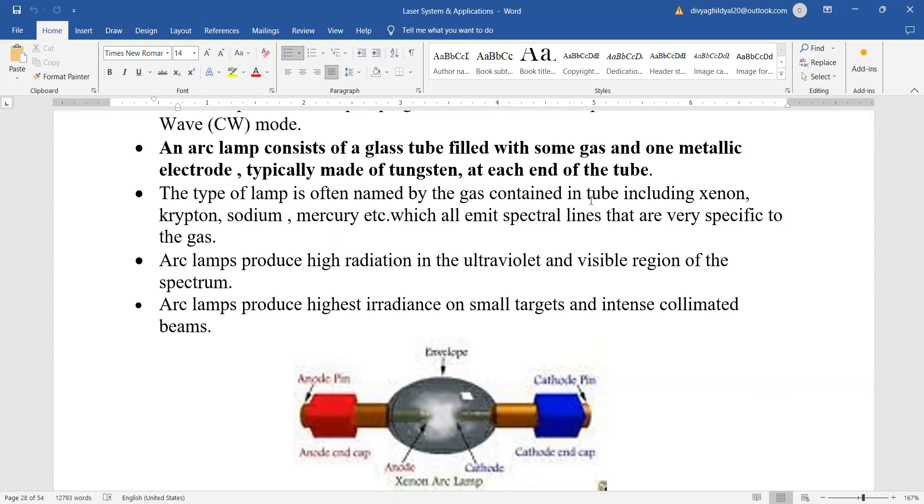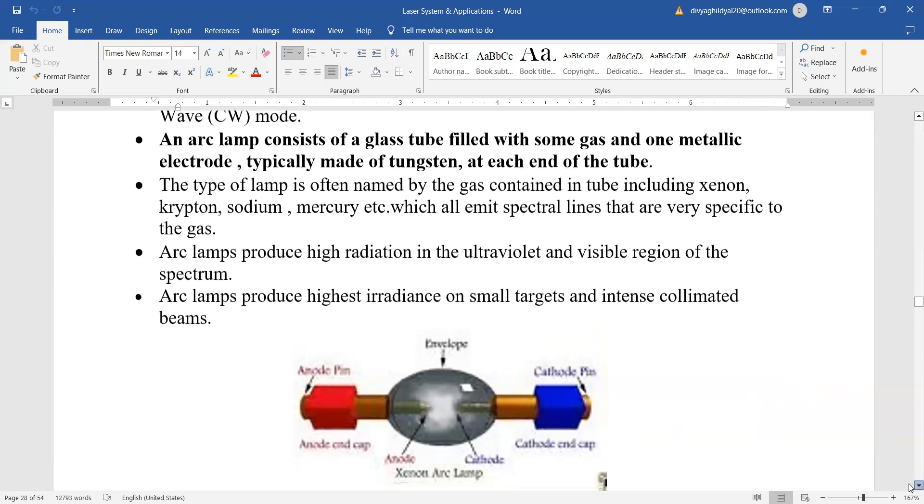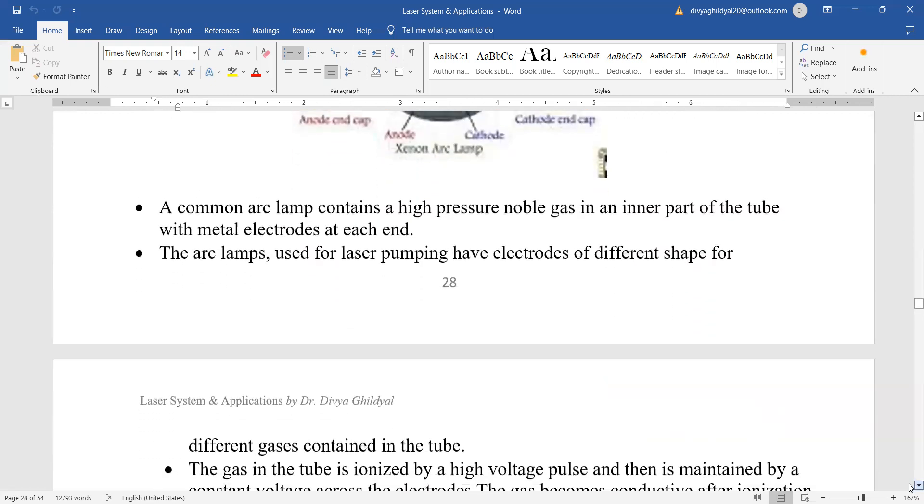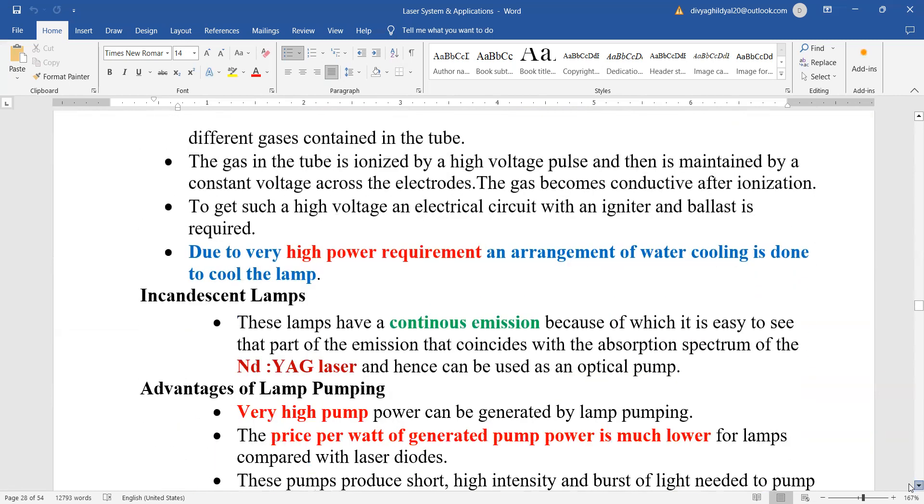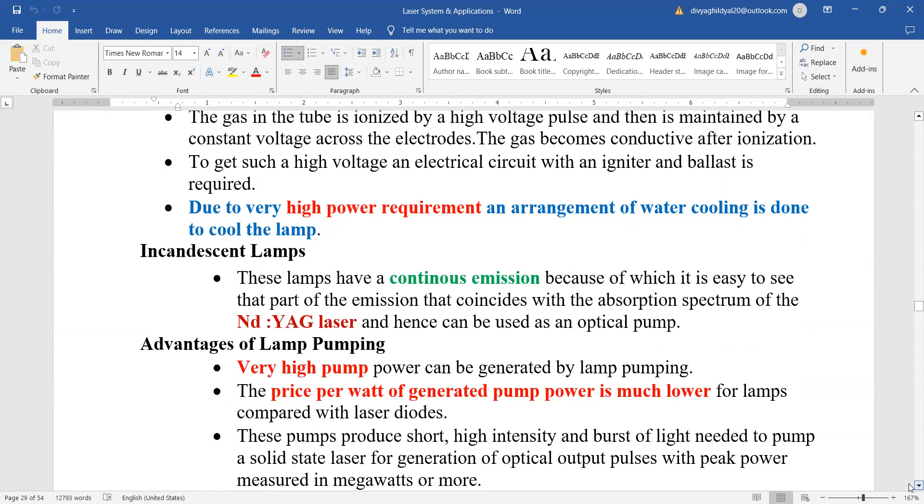Arc lamps produce high radiation in the ultraviolet and visible region of the spectrum. Arc lamps produced highest irradiation on small targets and intense collimated beams. These arc lamps used for laser pumping have electrodes of different shape. Now, due to very high power requirement an arrangement of water cooling is done to cool such lamps. You can keep ruby laser in mind when you are studying these sources.